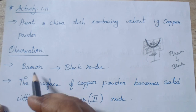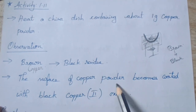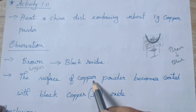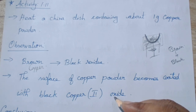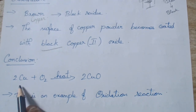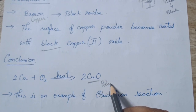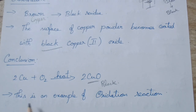What is your observation? The brown color copper is converted into a black residue. That means the surface of the copper powder becomes coated with black copper oxide. Upon heating, the copper reacts with oxygen present in the atmosphere and copper oxide is formed. The color of copper oxide is black. When copper reacts with oxygen in the presence of heat, it forms copper oxide (CuO), which is black in color. Since addition of oxygen is taking place, oxygen is added to the metal — this is an oxidation reaction.